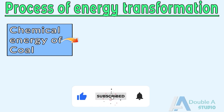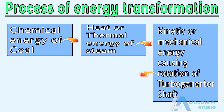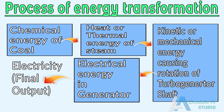It is also interesting to note how energy transforms from one form to another during the whole process. Heat or thermal energy of steam gets converted into kinetic energy in the turbine, and finally converts into electrical energy in the generator. That is how electricity is generated.